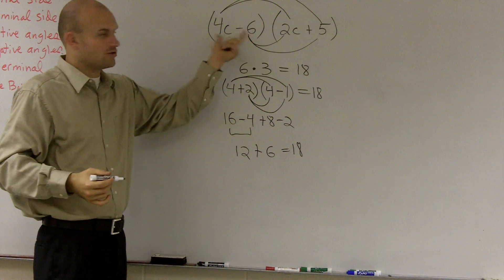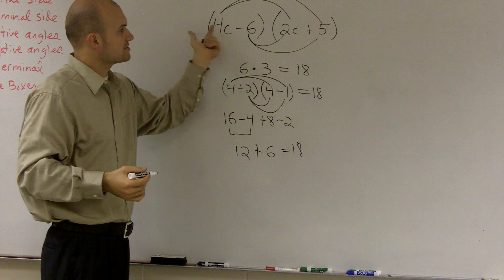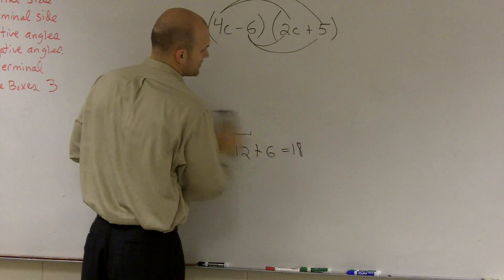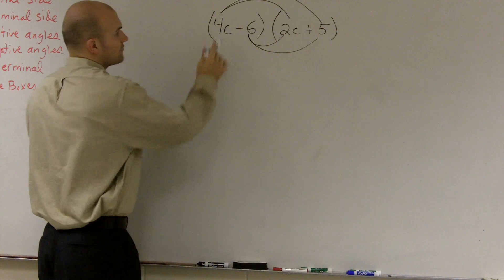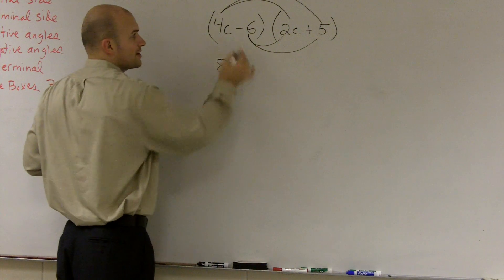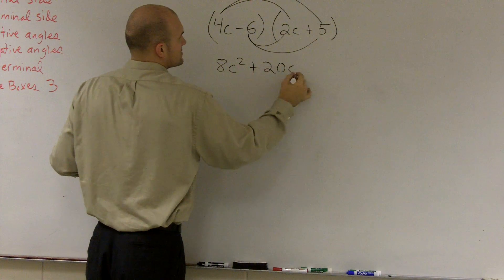Because we can't combine these binomials anymore, right? So since we can't combine them anymore, we're going to have to multiply them by every term. So therefore, when doing that, what I have is 4c times 2c is 8c squared. C times c is c squared. 4c times 5 is 20c.